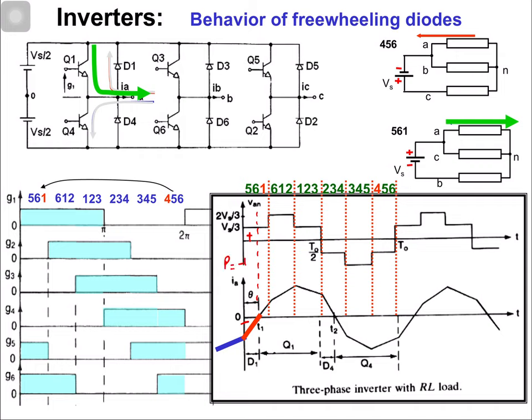When power is negative, the diode conducts because the inductor acts as a source of energy, providing energy back to the source — either delivered to the source or dissipated across the resistance in the loop.